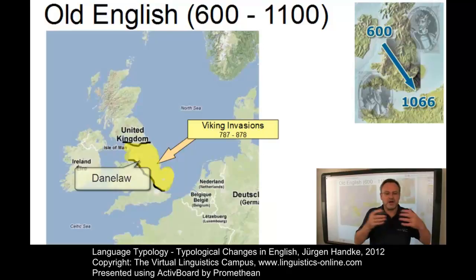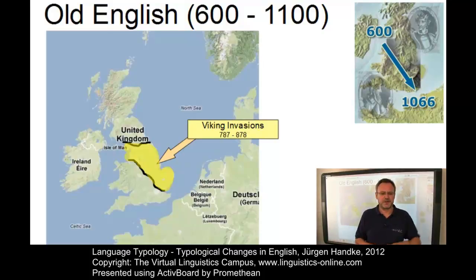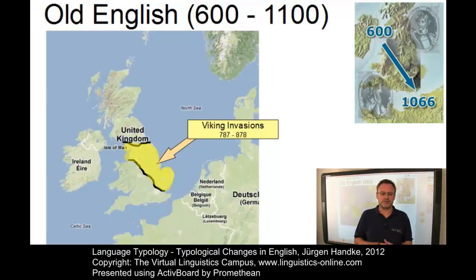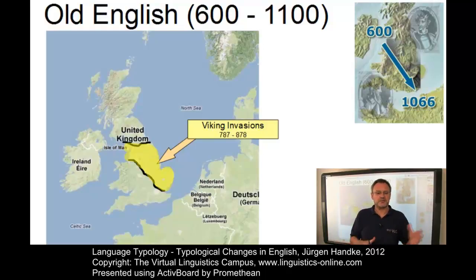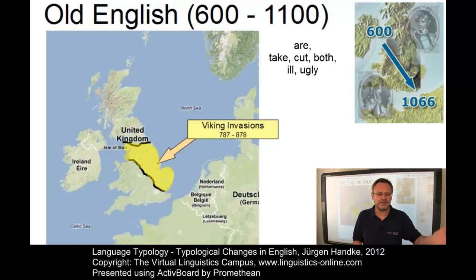About 40 Scandinavian, basically Old Norse, words entered Old English. Words pertaining to the sea and battle were introduced first. Shortly after the initial invasions, other words were taken over — for example, law terminology, and interestingly, the verb form 'are', and widely used forms such as take, cut, both, ill, and ugly, to name a few.